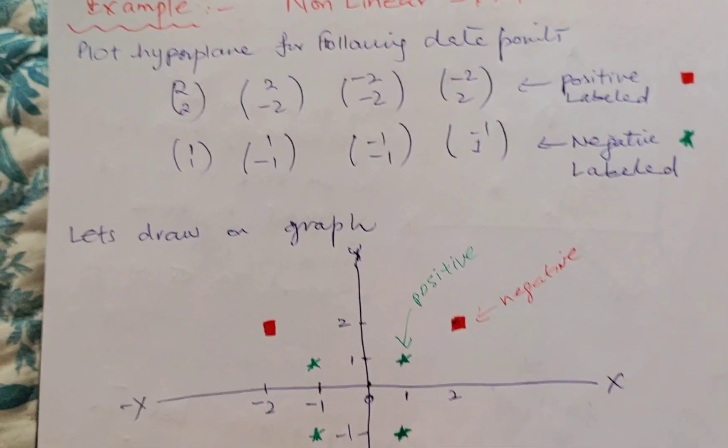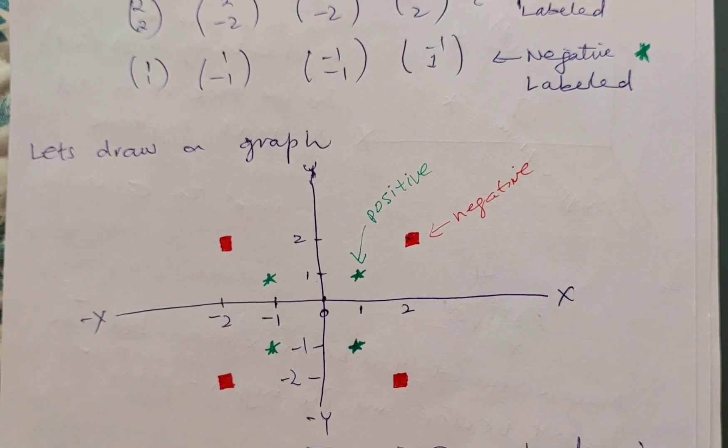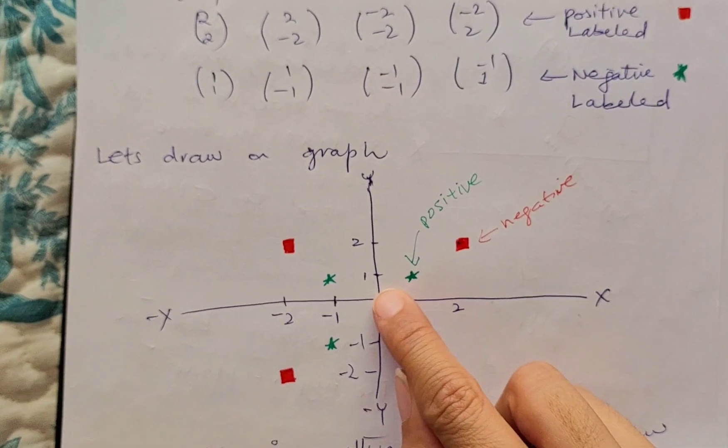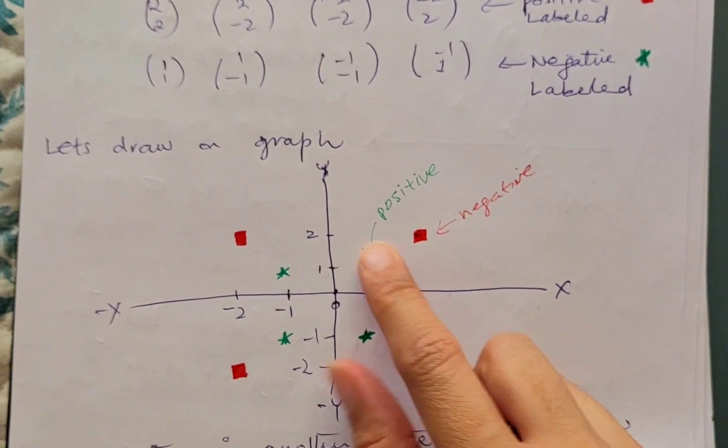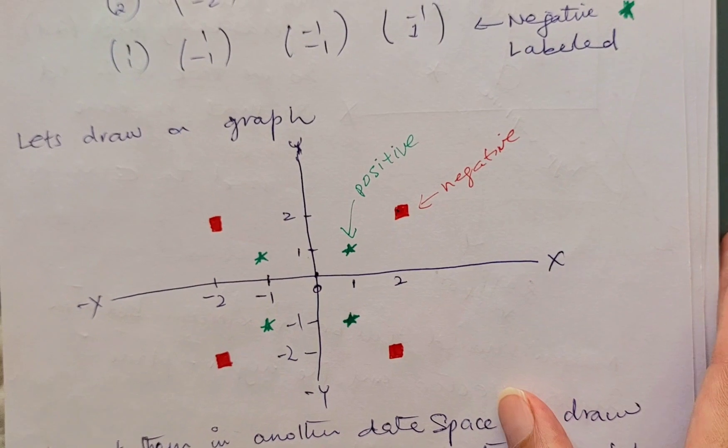Now, I can draw a graph for this data like this. Just tell me, is it possible that we can segregate this data with the help of a line? Because if I draw a line over here, there will still be a lot of confusion between the positive label data and the negative label data.